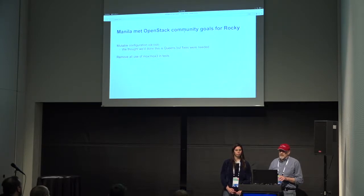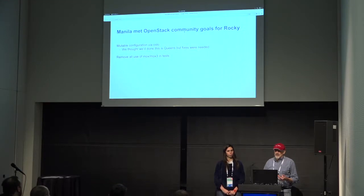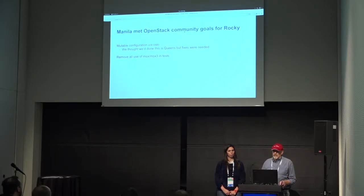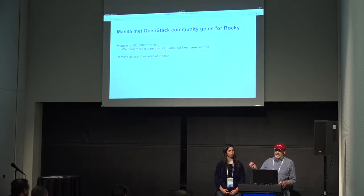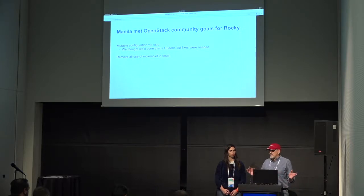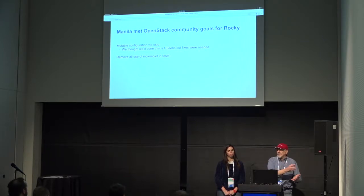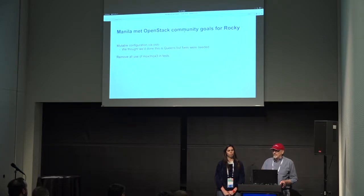There are community goals for every project — not every project always meets them, but they're asked to. We met ours in Rocky. One is mutable configuration: some configuration can be marked as mutable, for instance the setting for debug versus info logging. We mark that as mutable, so now we can do the equivalent of sending a SIGHUP to get that configuration to take effect. Before, you'd have to restart the service, which would disrupt control plane operations like creating or extending a share during the reload.